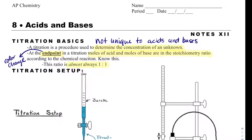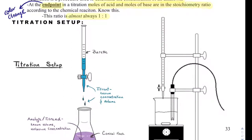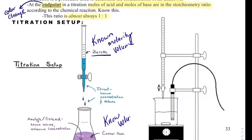With other reactions, that ratio is actually not usually 1 to 1, but with acids and bases it typically is 1 to 1. With a titration, we have a burette, and typically what is in the burette is known — so we can know the molarity and we can always know the volume. Underneath it, we might have an Erlenmeyer flask. We will know the volume, but we might not know the concentration.